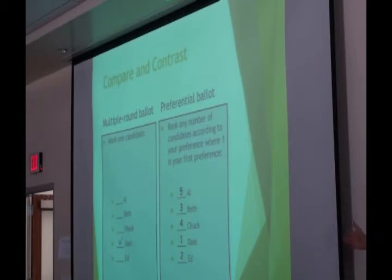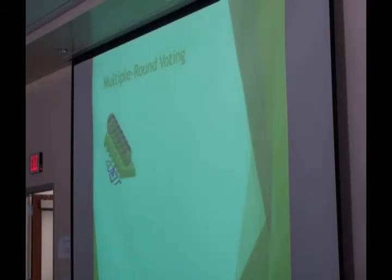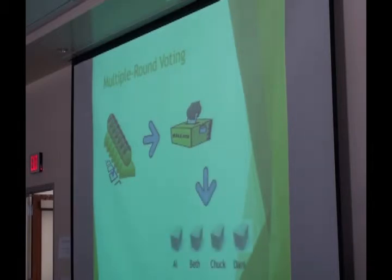Preferential voting is nothing more than multiple-round voting on the same piece of paper. To illustrate the similarities, here's a voter in a caucus who chooses one and only one candidate on his ballot. There's more than one person in a caucus, and all of them cast their ballots into a ballot box. The counters then count the ballots and create a stack for each candidate.